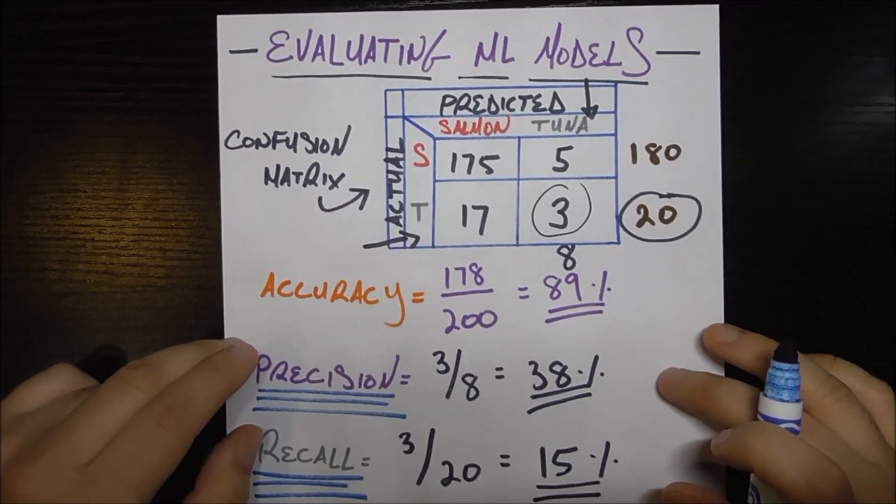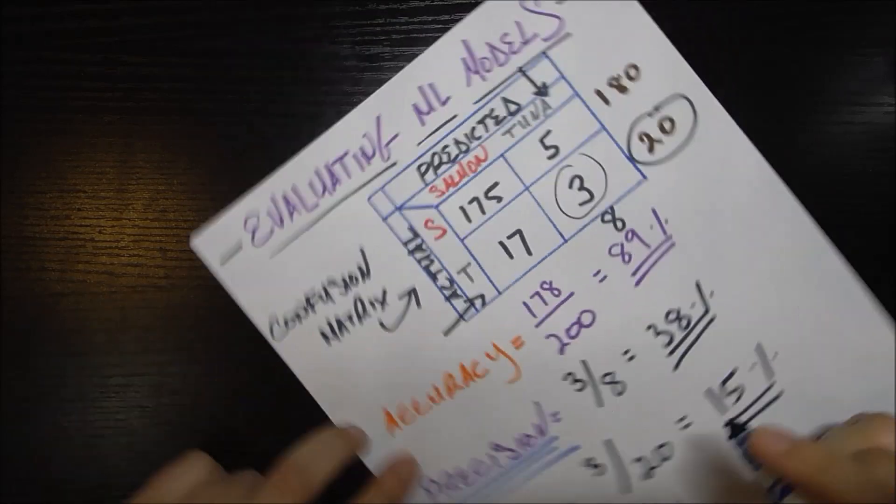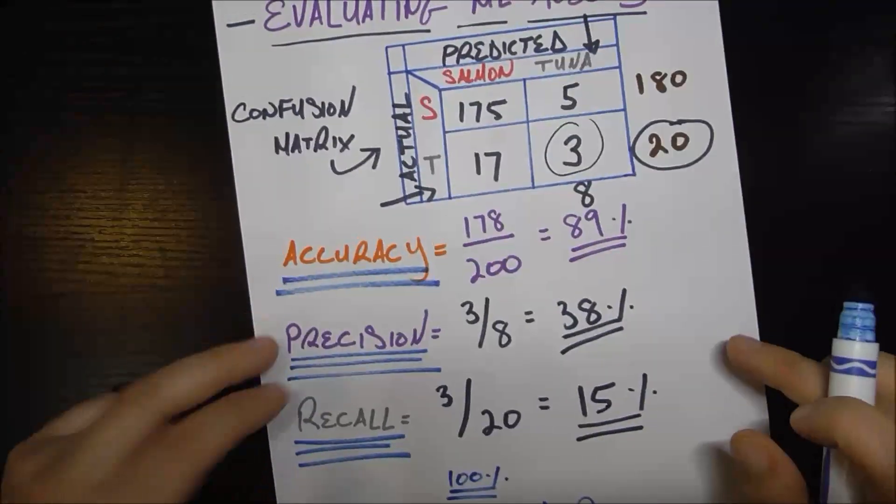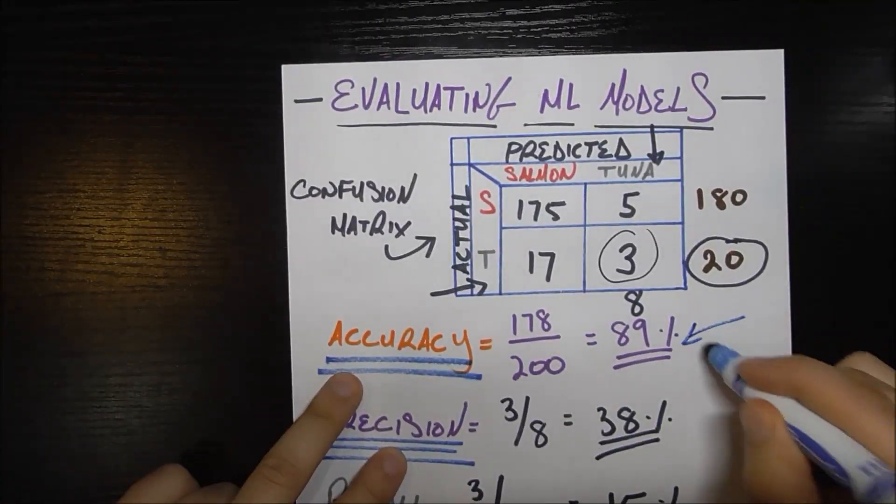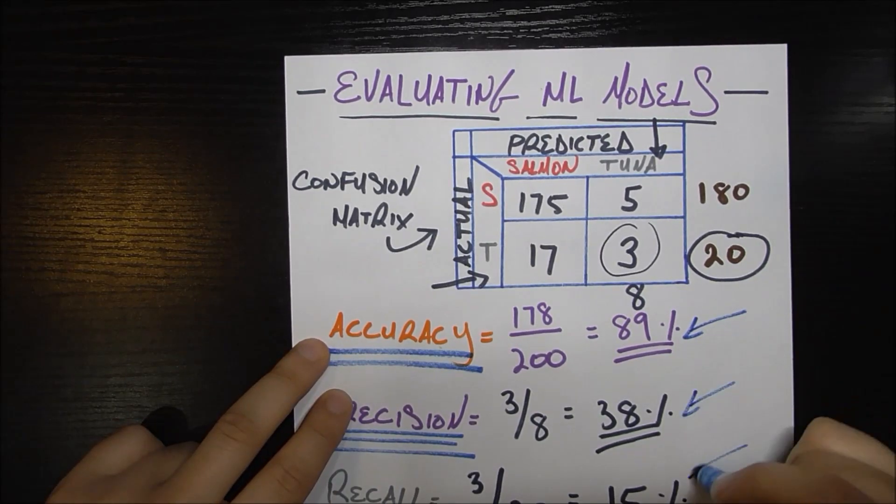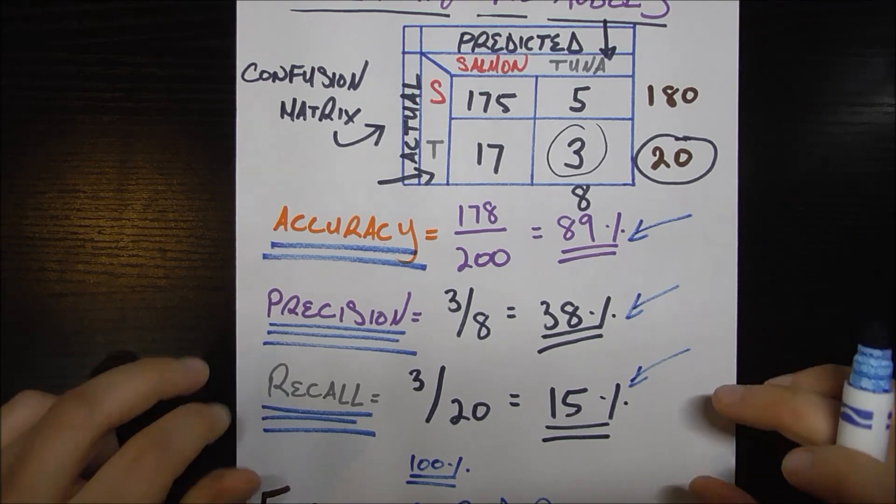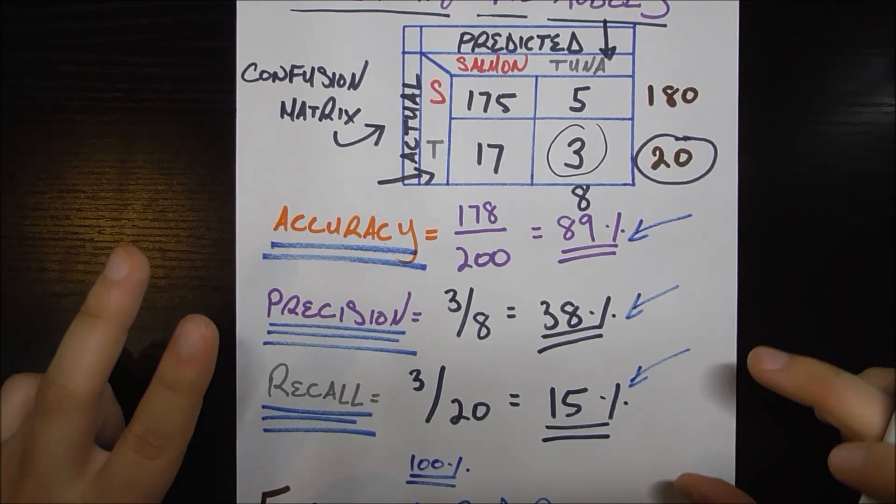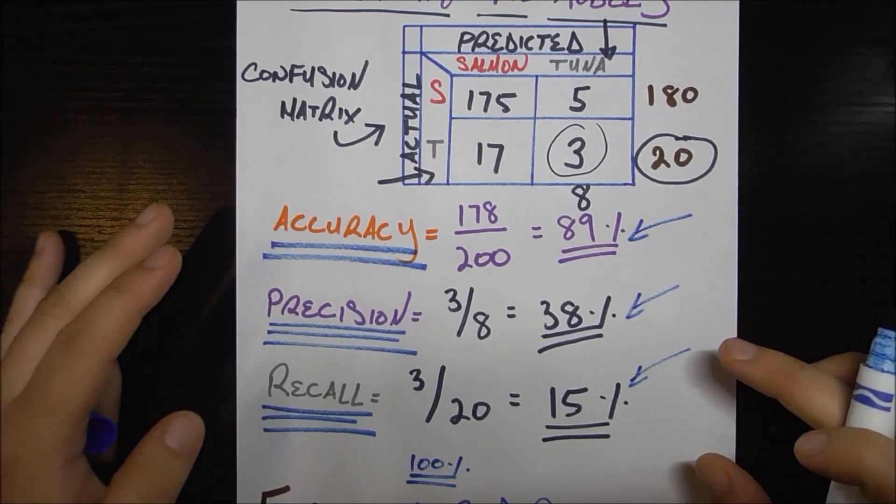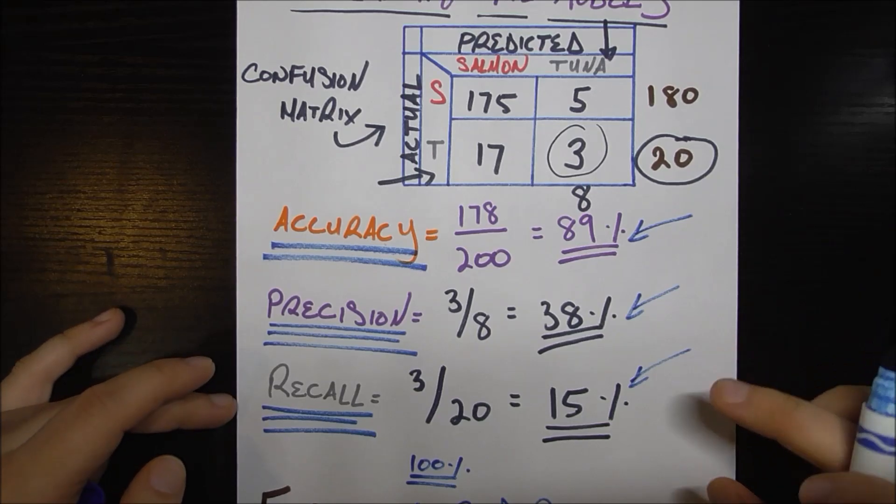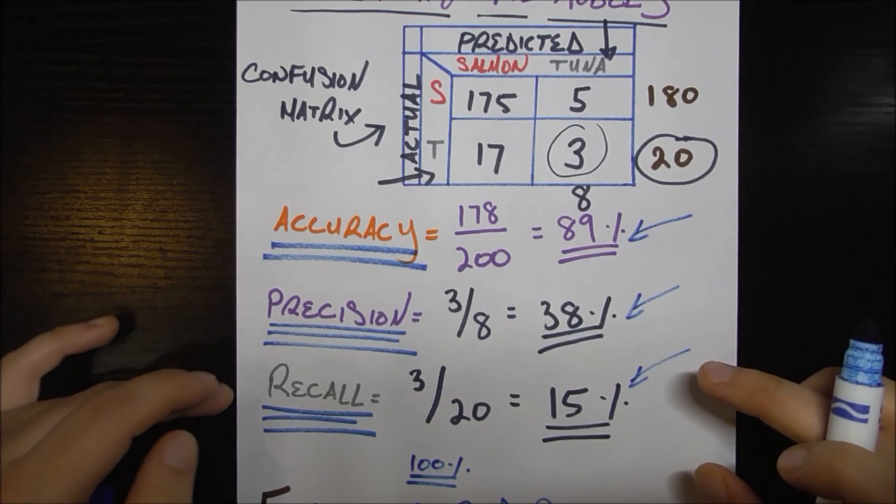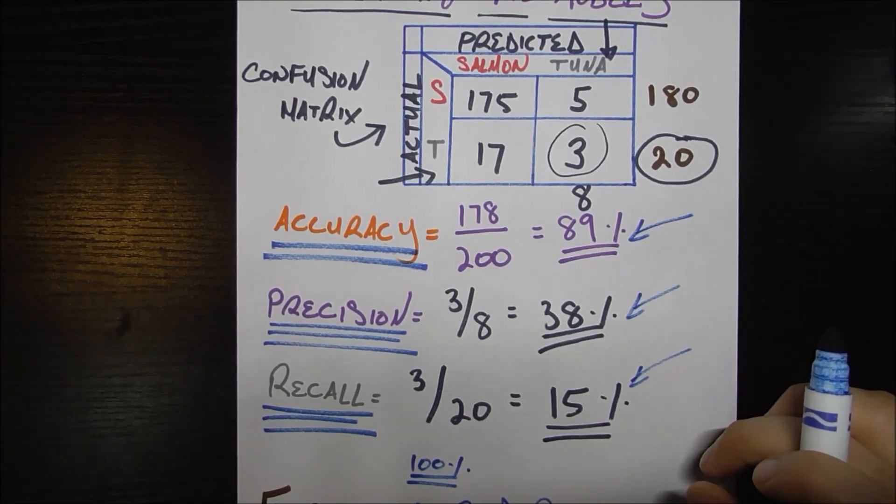The point I want to get across is that accuracy is not the end-all be-all metric. Here we saw our accuracy was high but our precision and recall were considerably lower. Basically look at your problem situation in the context of everything and think about which of these metrics is really important to you and try to maximize that one. Until next time.